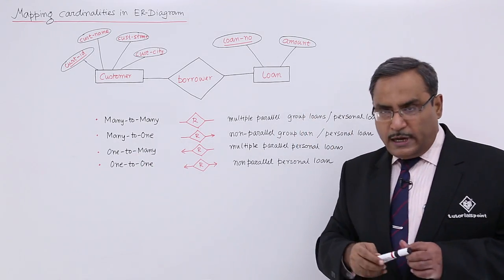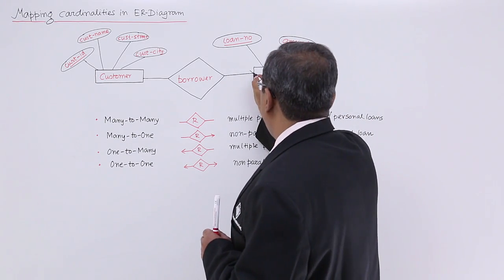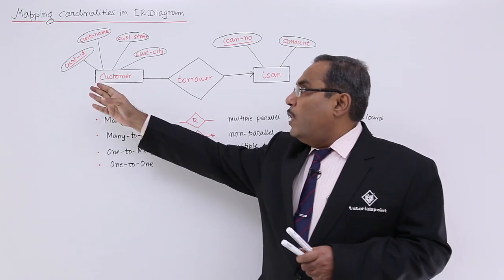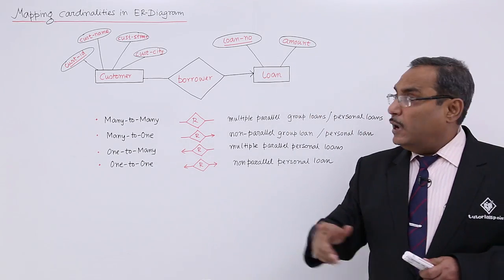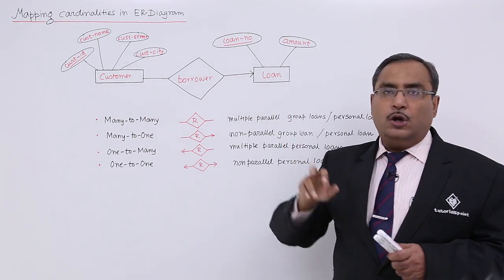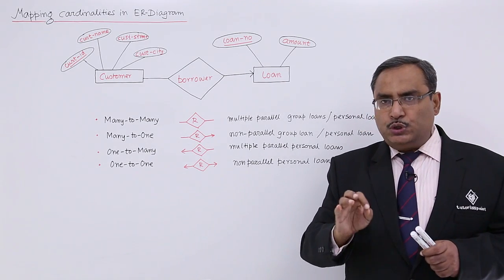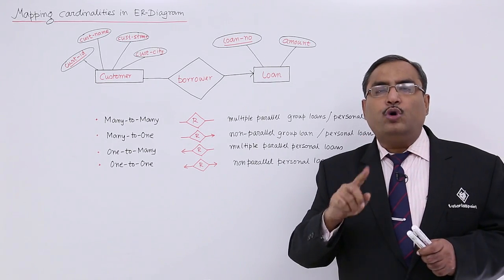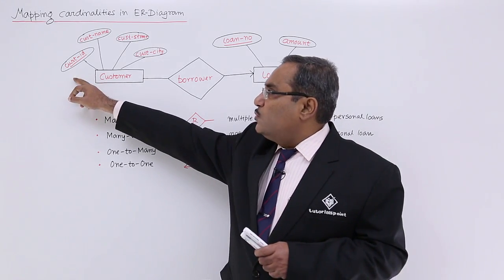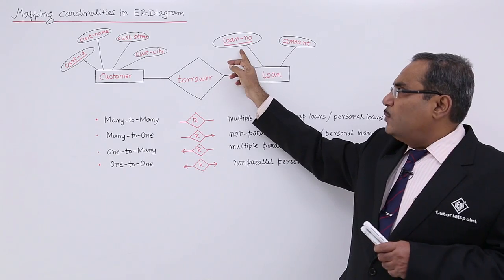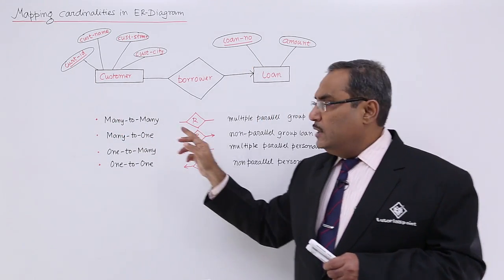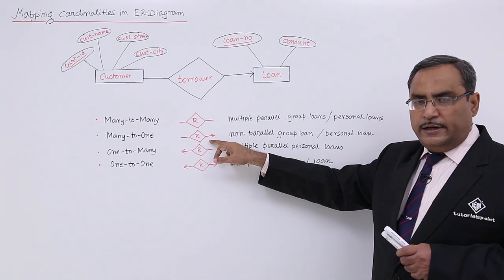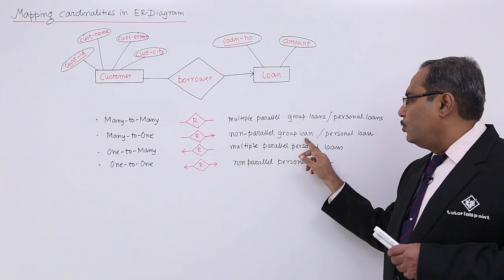In case of many-to-one, the arrow comes toward one side — many-to-one. That means against one Loan Number, we can have one or more Customer IDs. But against one Customer ID, there will be only one Loan Number. That means this bank issues group or personal loans which are non-parallel — a customer cannot enjoy more than one loan at a time. As an inference: this bank issues non-parallel group loans or personal loans under the many-to-one cardinality ratio.